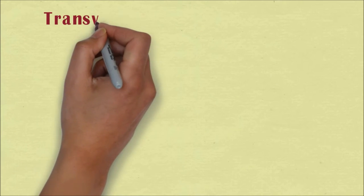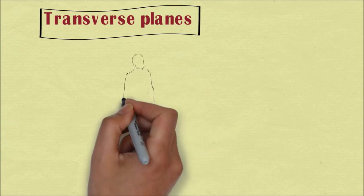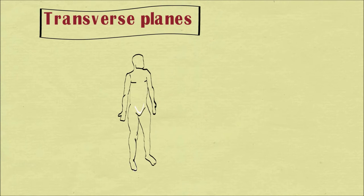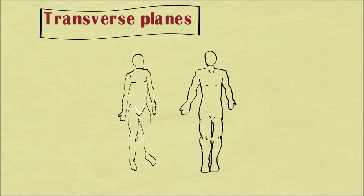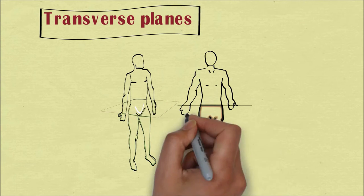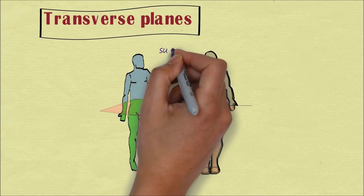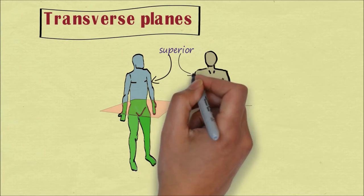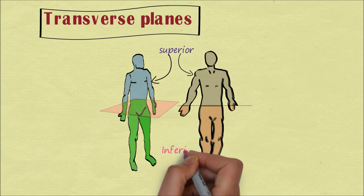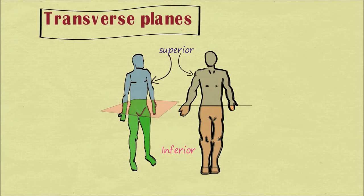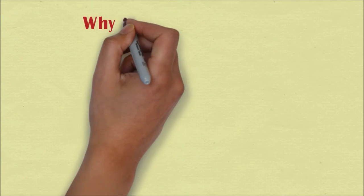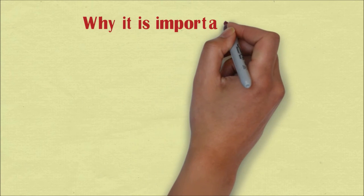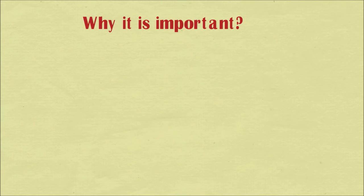The last one is the transverse plane, also known as the horizontal or axial plane. This plane divides the body into two parts: the part which is above is known as the superior, and the part which is below is known as the inferior. The transverse plane lies at right angles to both the sagittal and coronal planes.